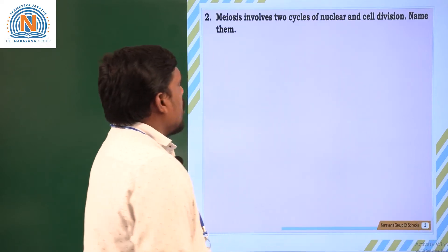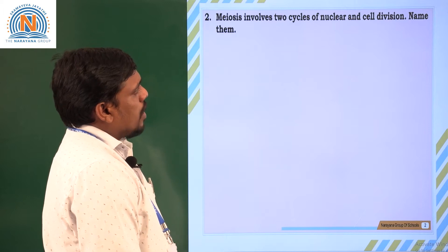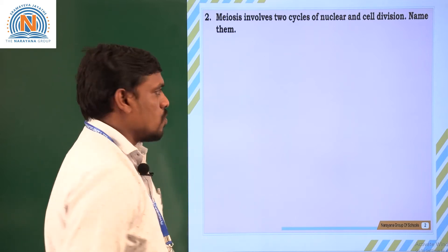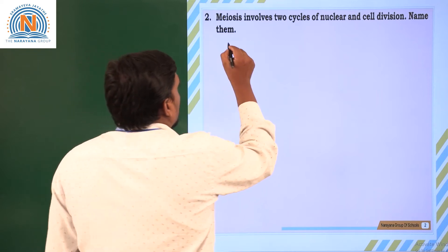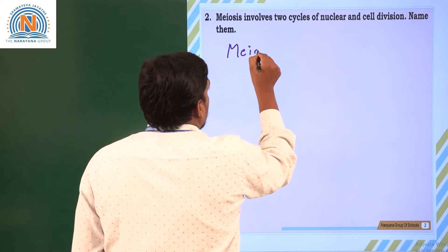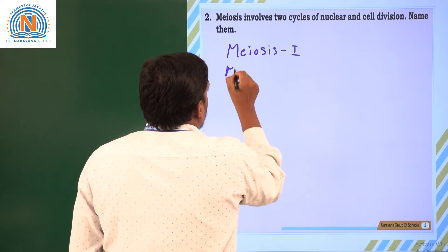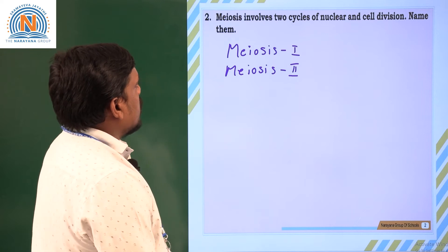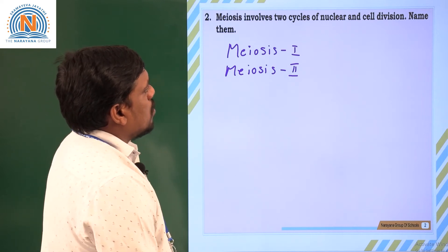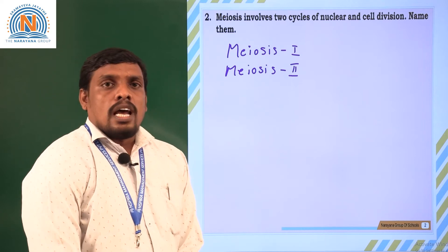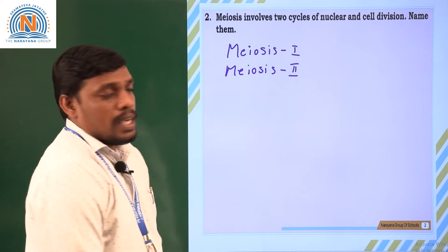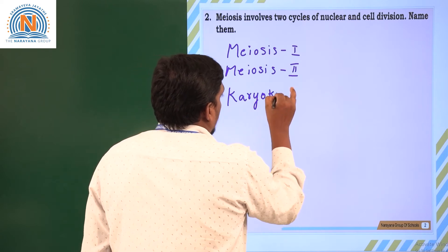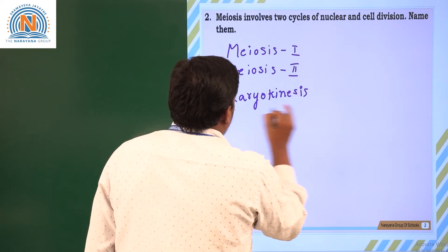Moving on to the next question: meiosis involves two cycles of nuclear and cell division — name them. The two major cell divisions seen in meiosis are meiosis one and meiosis two. In these two stages, nuclear and cell division occur, and along with the nucleus, the cytoplasm also breaks down. Division of the nucleus is called karyokinesis.